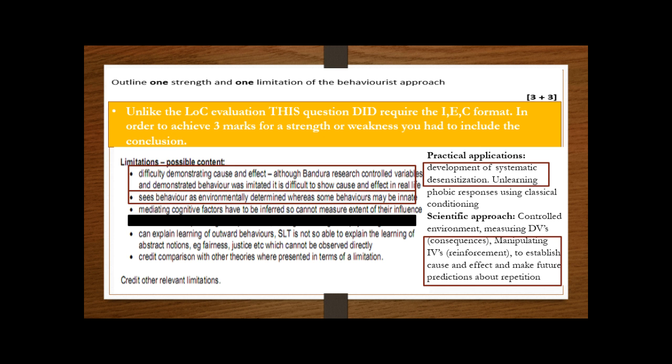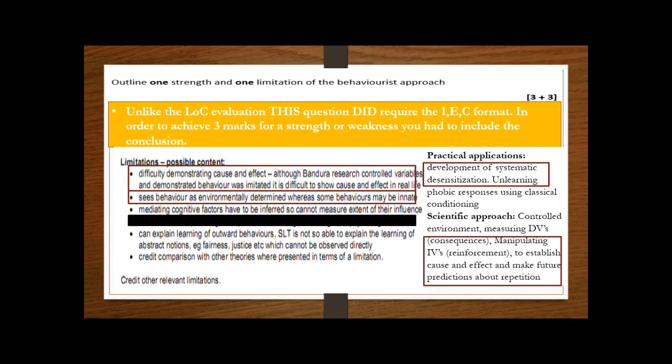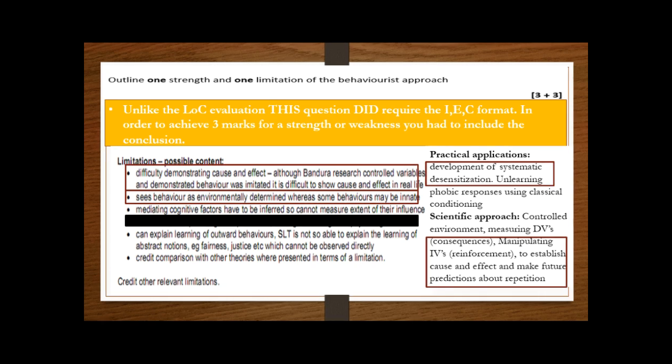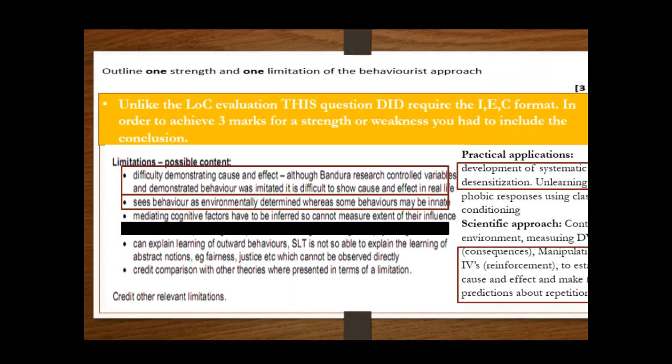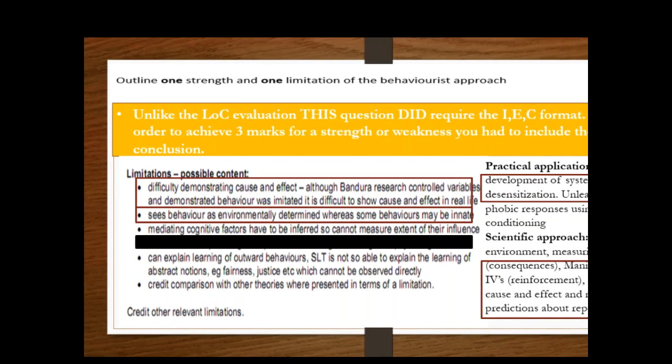Next, then, one strength and one limitation of the behaviorist approach. Now this is different to the locus of control question because it's three and three. So this did require the IEC format—you had to get conclusions in there if you wanted to get up to full credit. Likely content: this stuff here about demonstrating cause and effect, we didn't give you that, but if anybody was thinking on those lines of trying to come up with their own evaluation points, then you could have got credit for that. Arguing that sometimes the evidence is difficult to establish cause and effect because the extraneous variables might not have been controlled correctly, but that was difficult for you to achieve. This point here—sees behavior as environmentally determined whereas some behaviors may be innate—a lot of you went for that, talking about the reductionist idea.